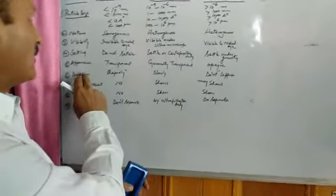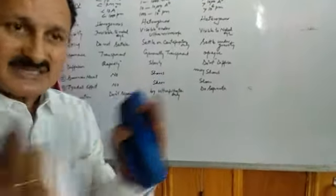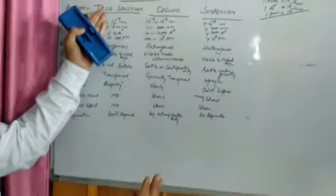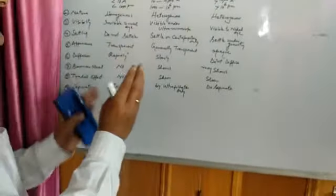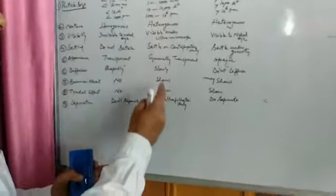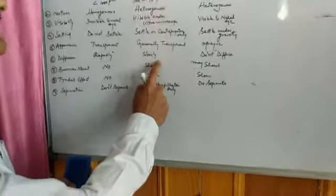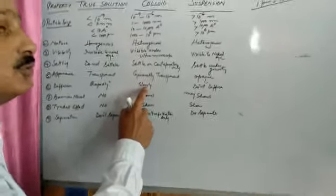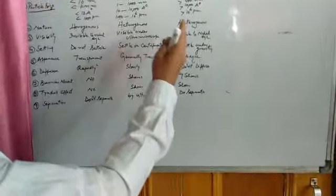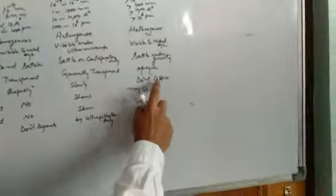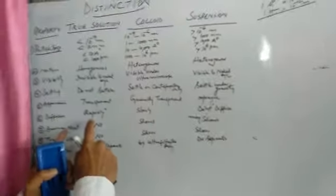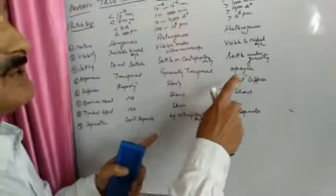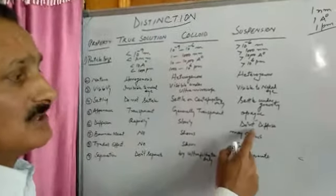Coming to another property: diffusion, meaning intermixing of particles. Since the particle size of true solutions is very small, they diffuse very rapidly. Colloids also diffuse, but slowly. As for suspensions, because their particle size is larger, they do not diffuse at all.